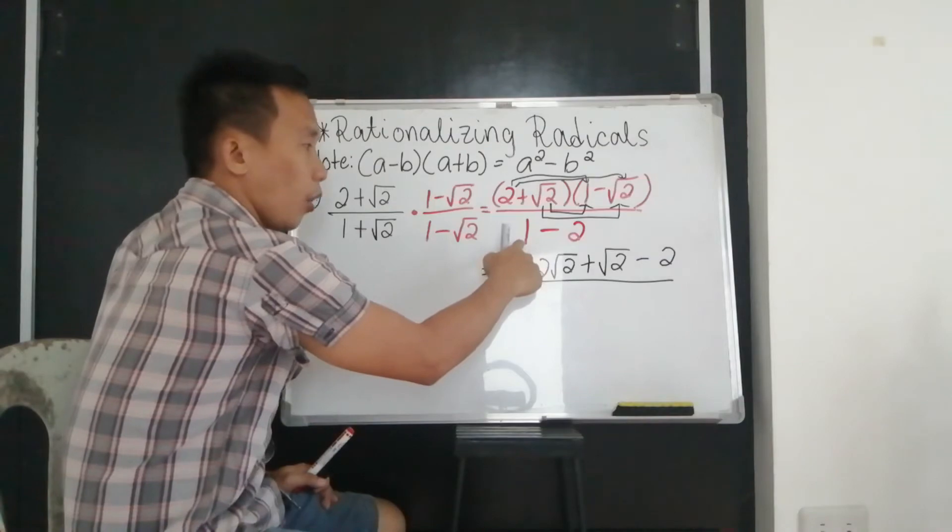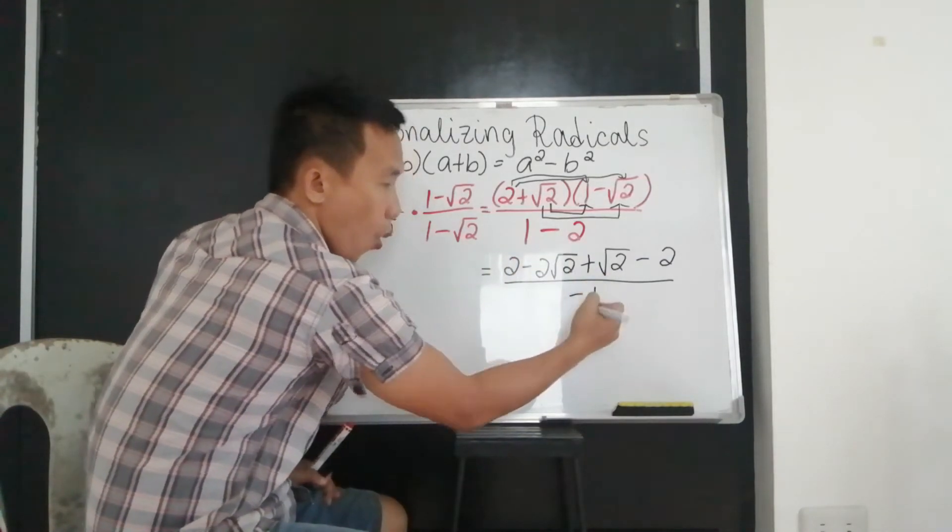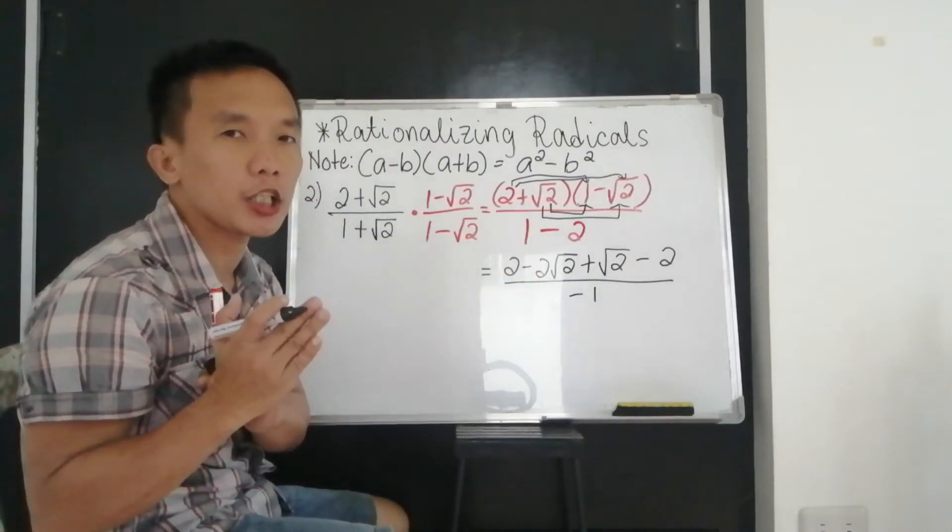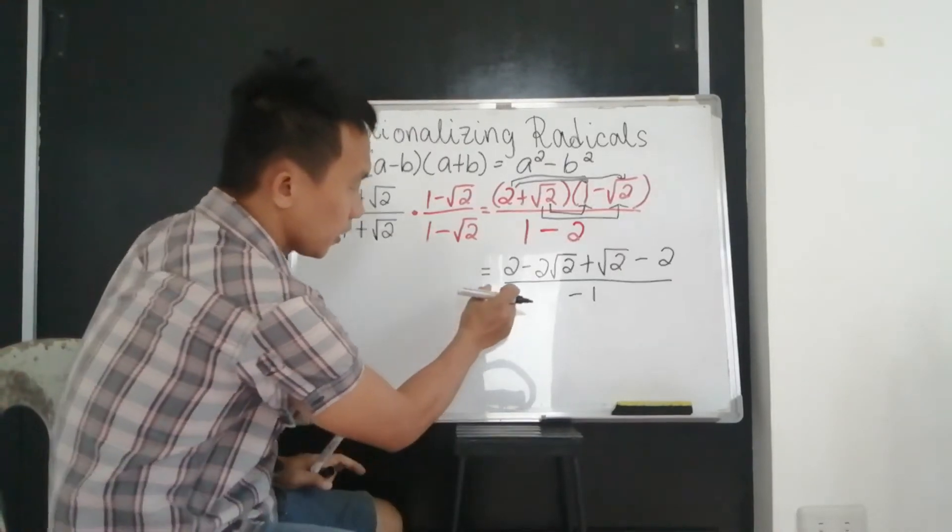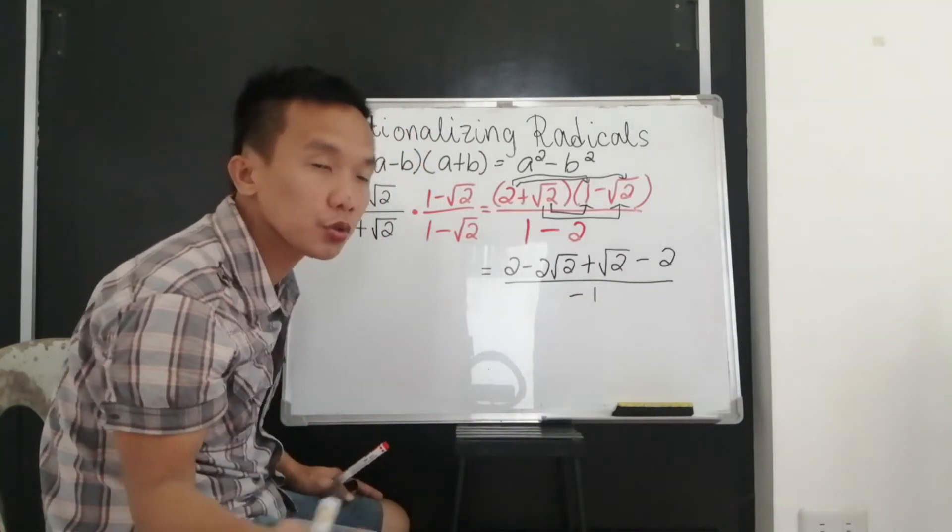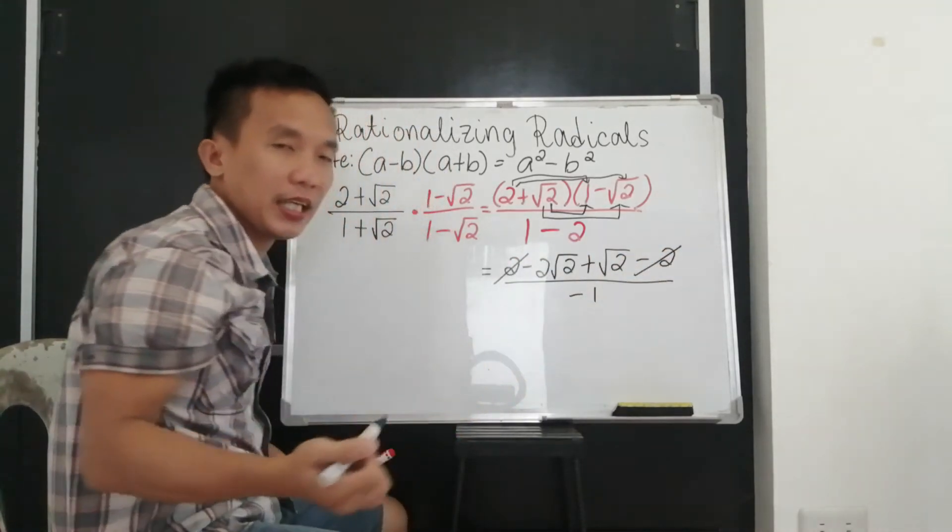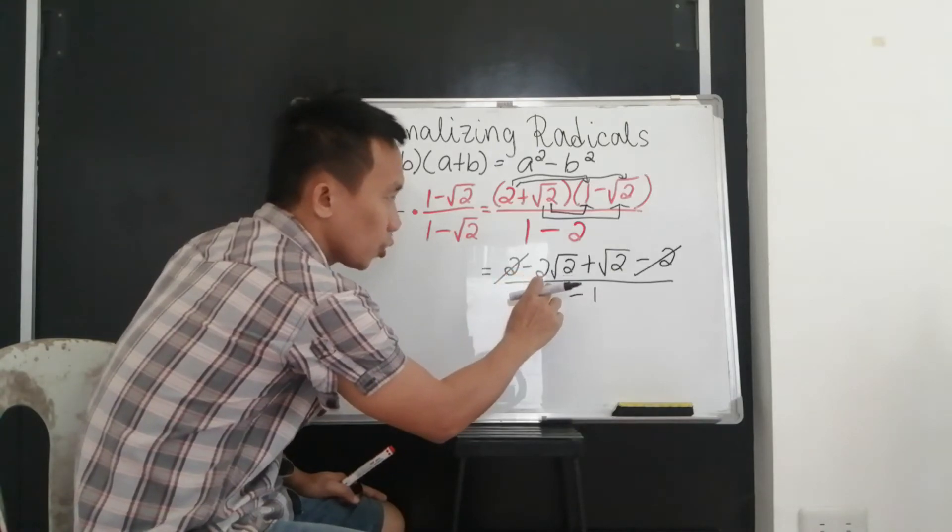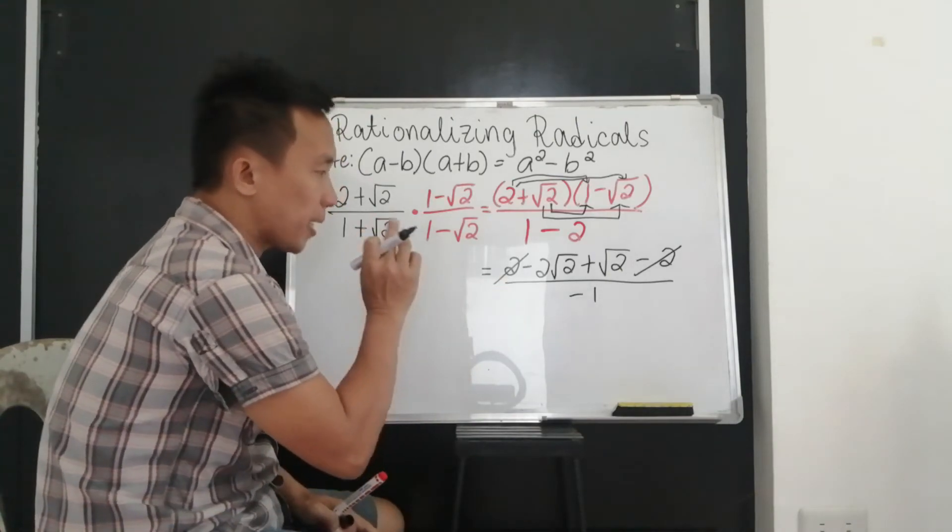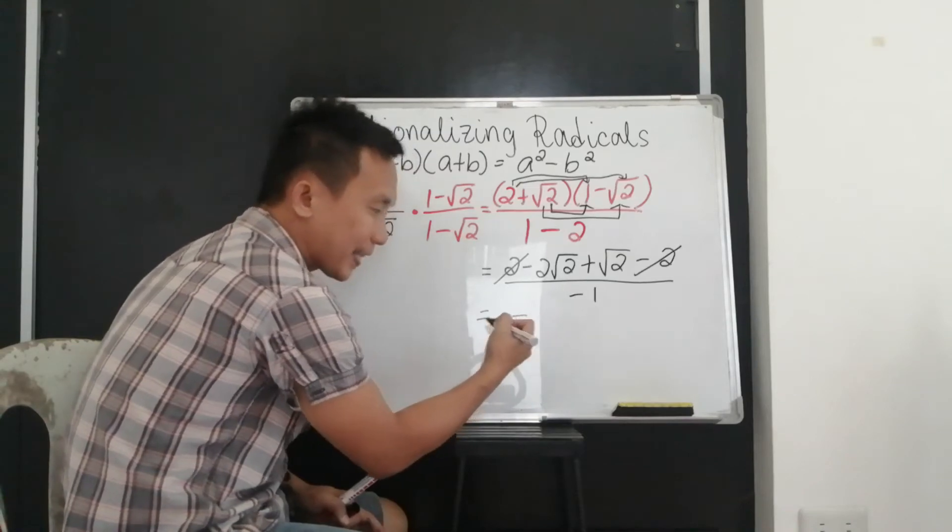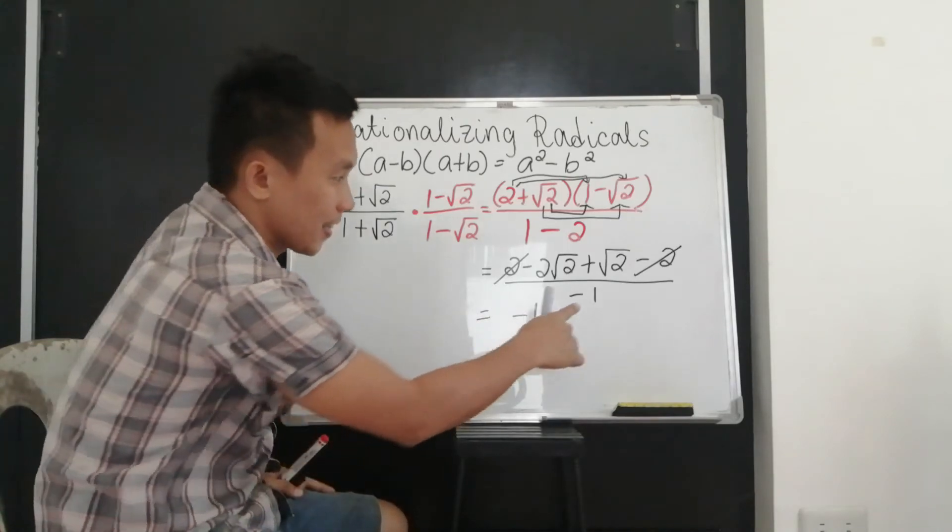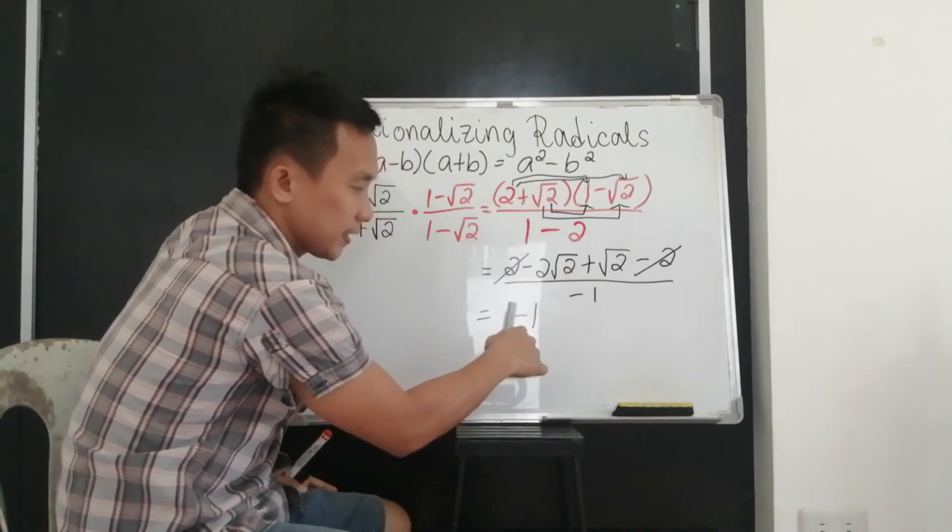So that, solve your denominator. 1 minus 2, that is just negative 1. Then, simplify. So look for similar terms that you can combine. So look at your number. You have 2 and a negative 2. So that's 2 minus 2. That will become 0. And negative 2 plus 1. So they are now opposite side. But your 2 is larger, so this will become a negative 1. Why is it 1? Because 1 minus 2 is negative 1.